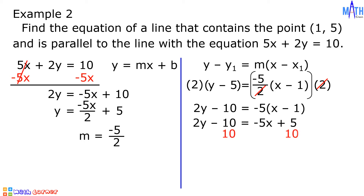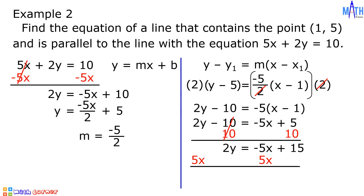Let us add positive 10 on both sides of the equation. Since -10 + 10 = 0, then we have 2y on the left side. On the right side, since 5 + 10 = 15, then we have -5x + 15. Next, let us isolate the constant term on the right side by adding 5x on both sides. On the left side, we have 5x + 2y. On the right side, -5x + 5x = 0, and 0 + 15 = 15. This is the equation of the line that contains the point (1, 5) and is parallel to the line 5x + 2y = 10.